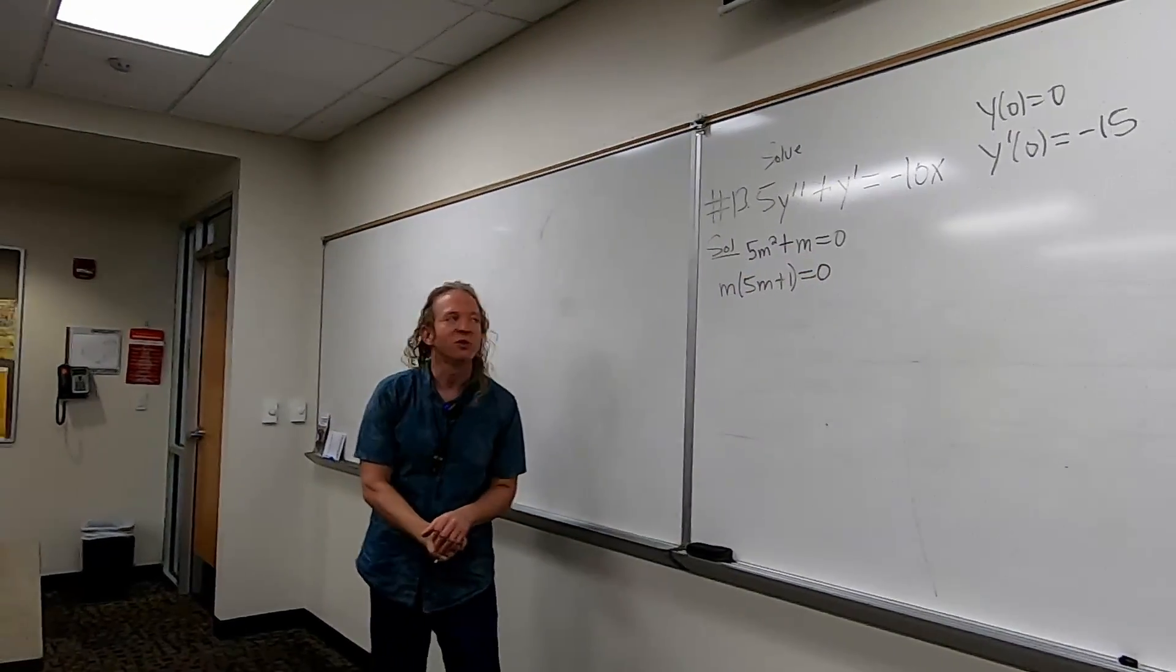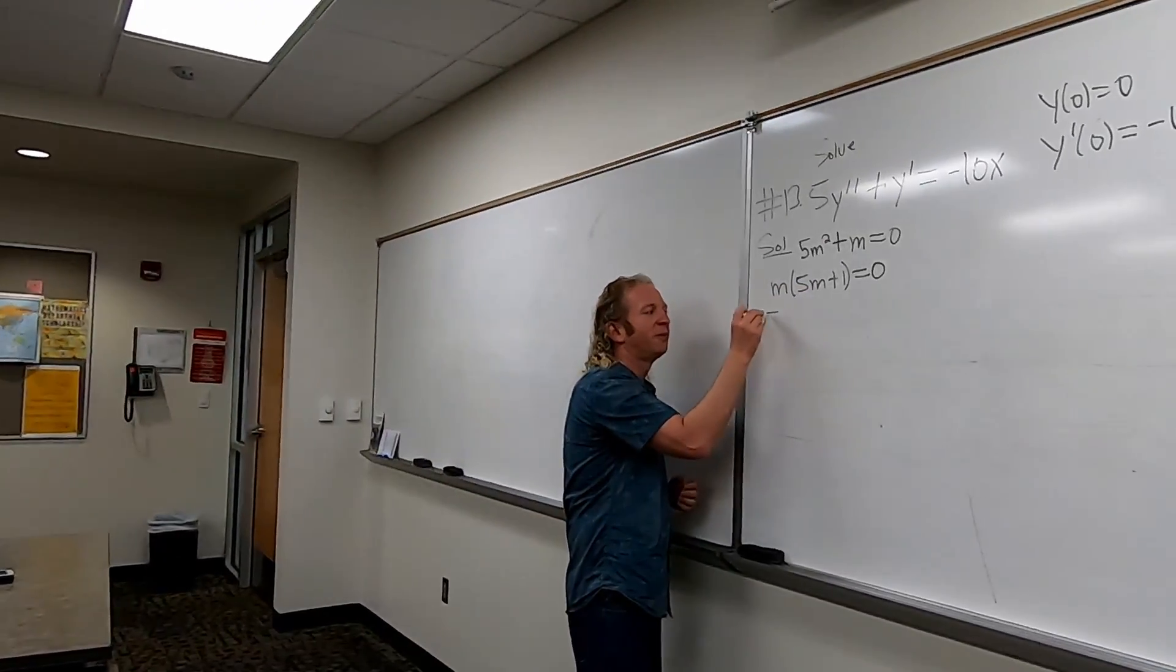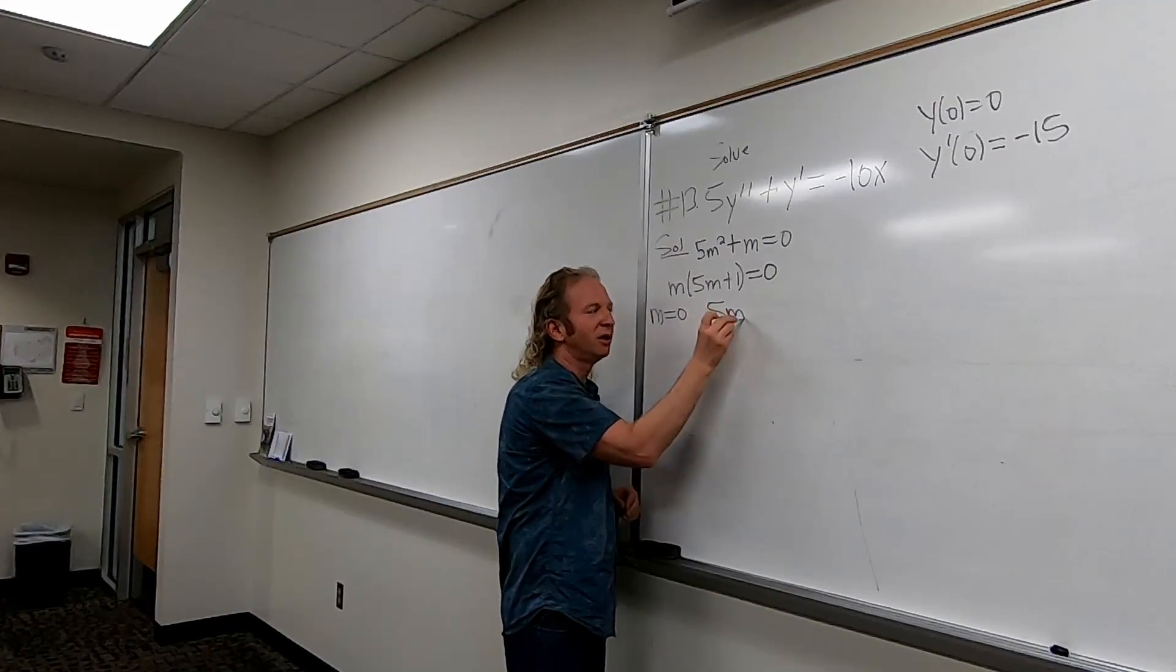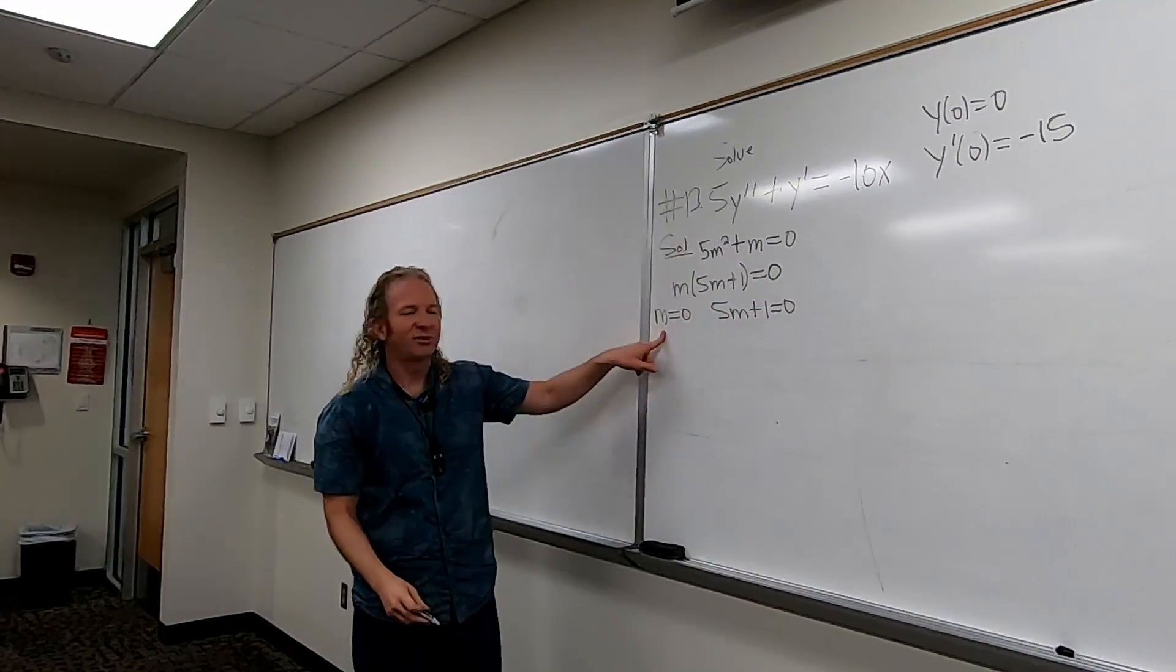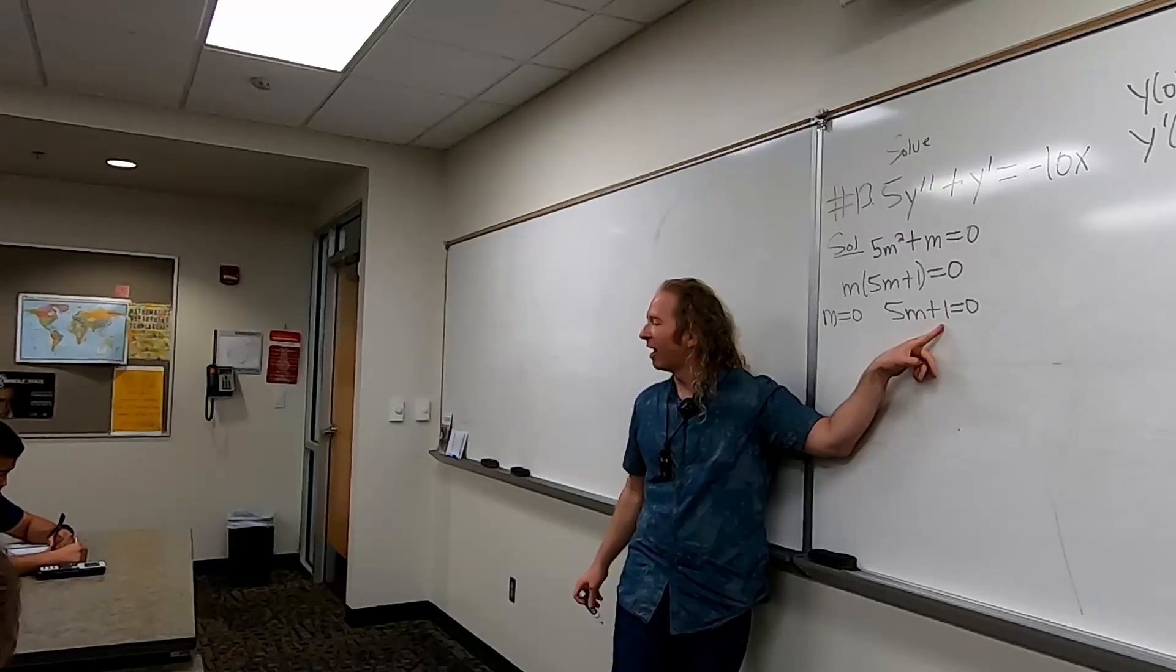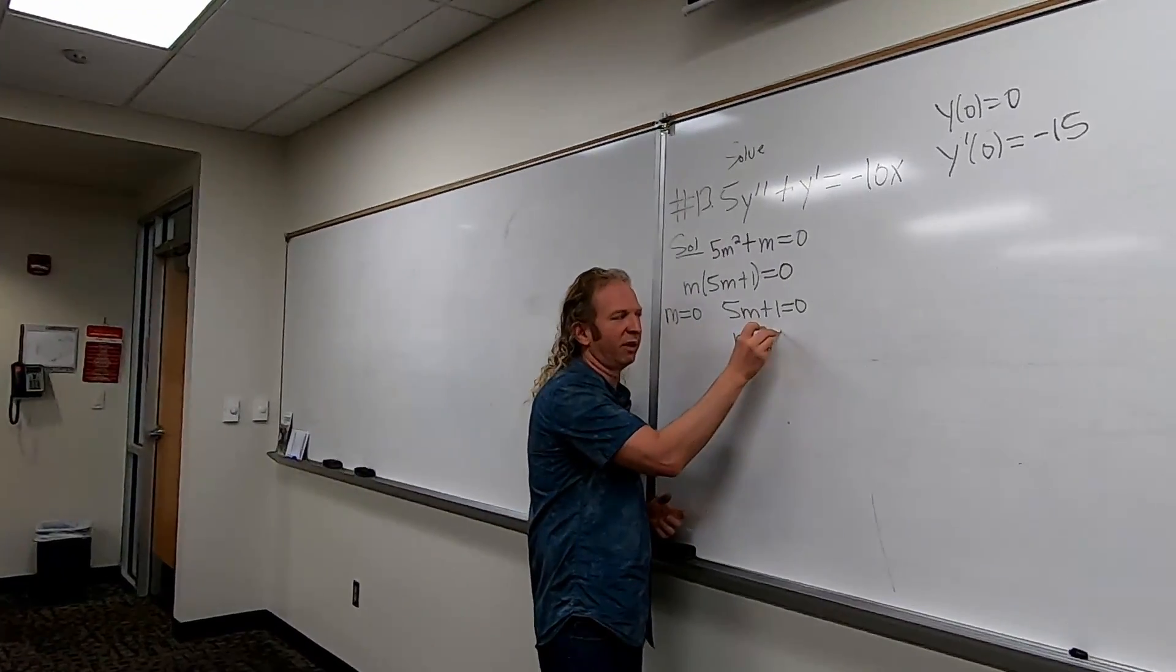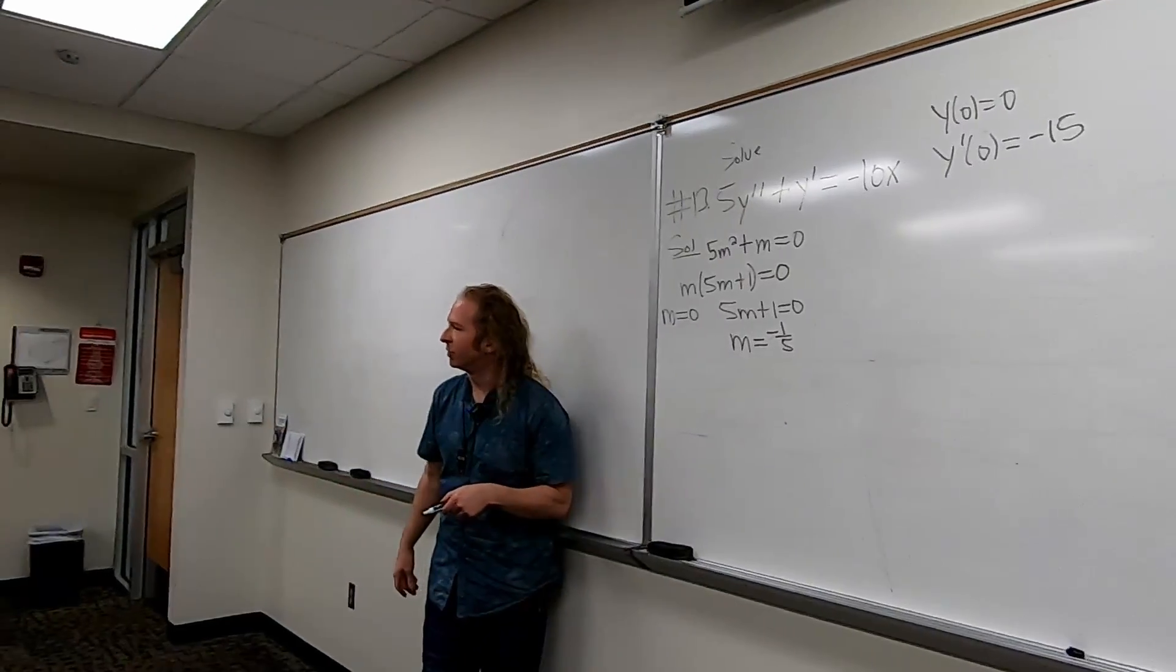Equals 0. So you get two answers. We'll set the product equal to 0. I'll show the work. M equals 0. Then you do 5m plus 1 equals 0. So that's the answer there. That one's easy. M equals 0. And then this one you can subtract 1 and divide by 5. So you would get negative 1 fifth, right? One negative 1 fifth. So we have two distinct real roots again.